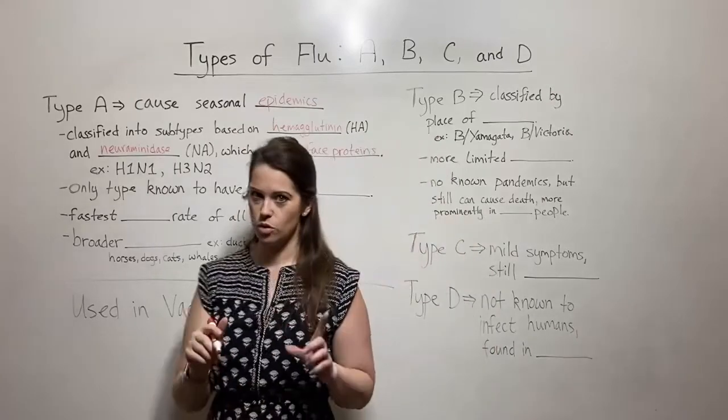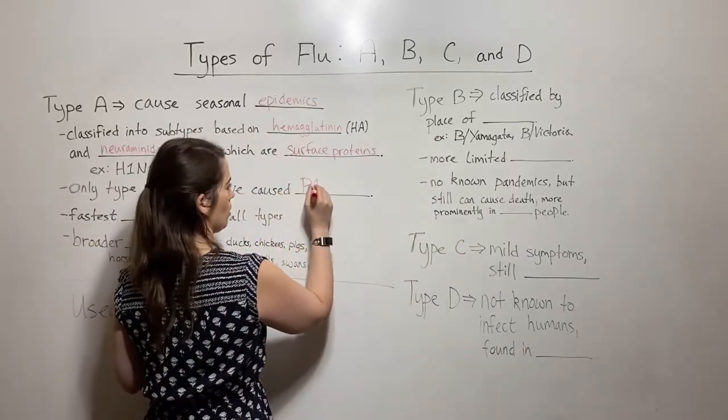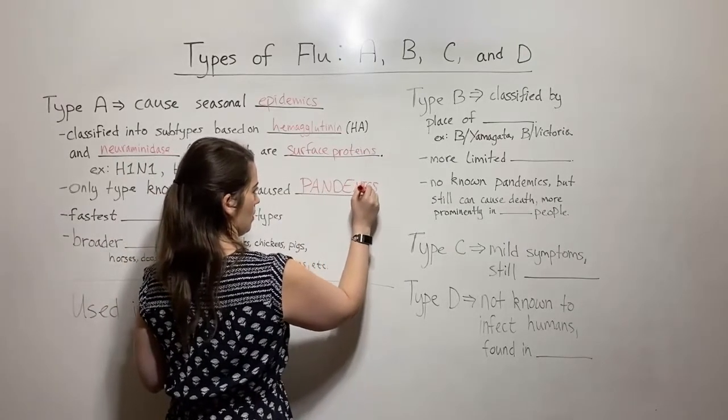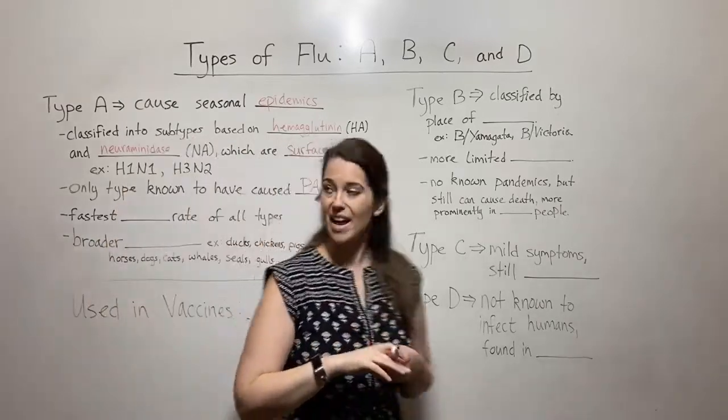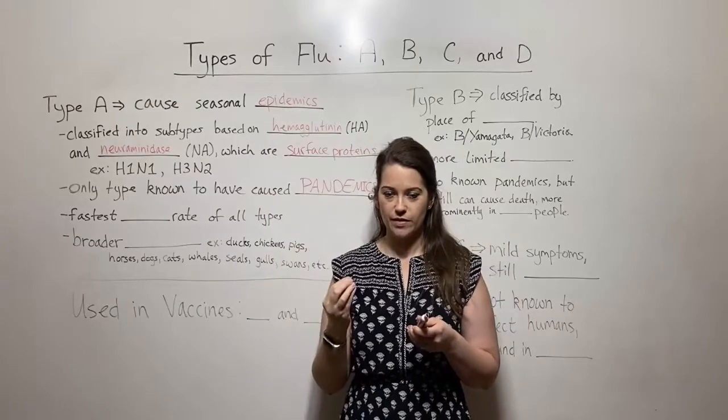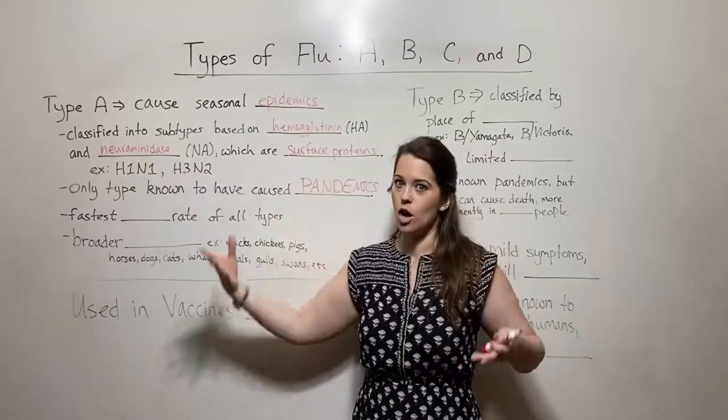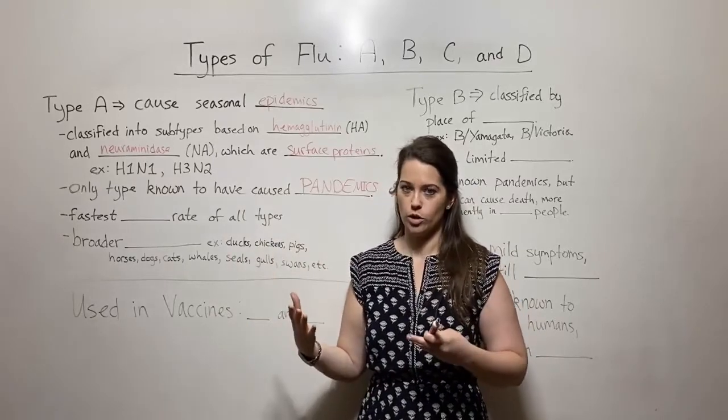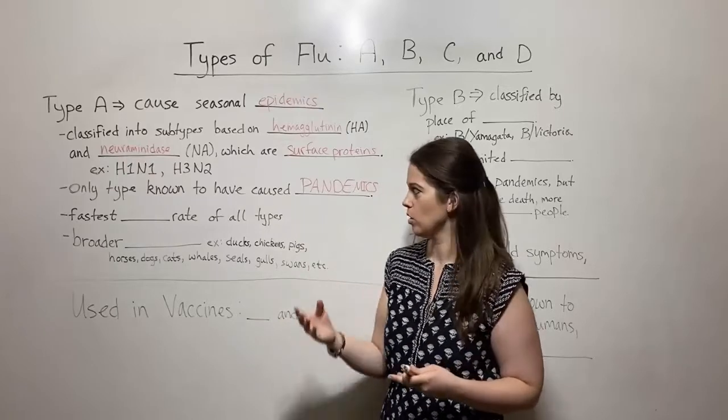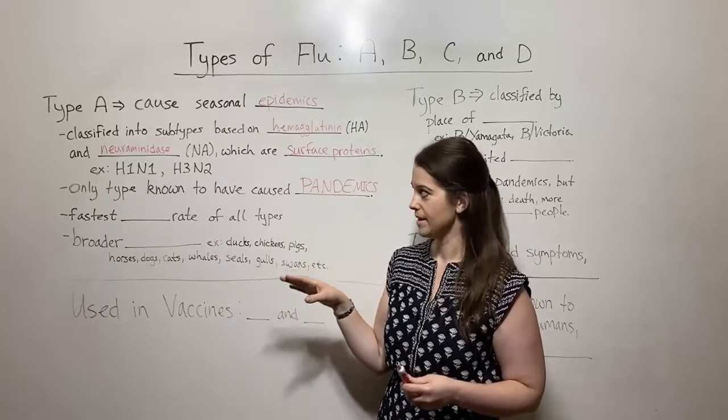So back to type A. Type A is the only type that is known to have caused pandemics. I'm going to put this one in all caps, pandemics. So we know that epidemics are when you have a lot of people getting sick in a short period of time in a distinct location. A pandemic is when an epidemic has taken on global worldwide proportions, so impacting a huge amount of the world. And so type A is the one that is known to cause those major flu pandemics.